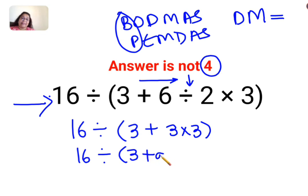So this then comes out to be 16 divided by 3 plus 9 is 12. When you do this, basically this looks like 16 divided by 12. When you reduce this, it comes out to be 4 upon 3.